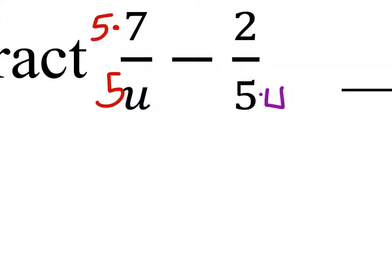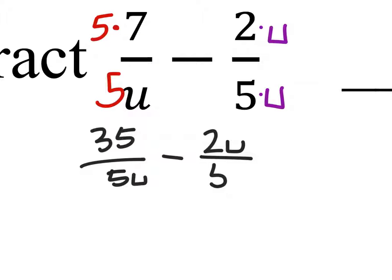The 5 just is missing a U, so if I do it to the denominator, I've got to do it to the numerator as well. So when we rewrite this, 5 times 7 is 35 over 5U. Minus 2 times U is 2U over 5U.